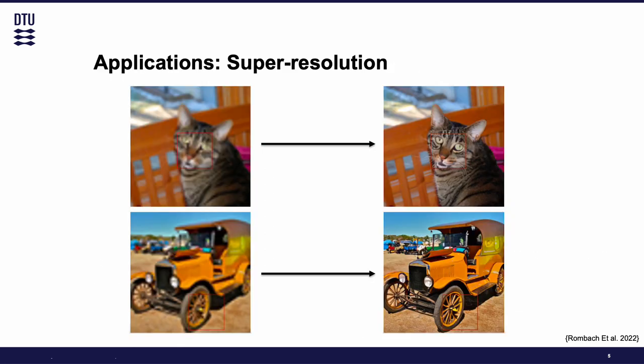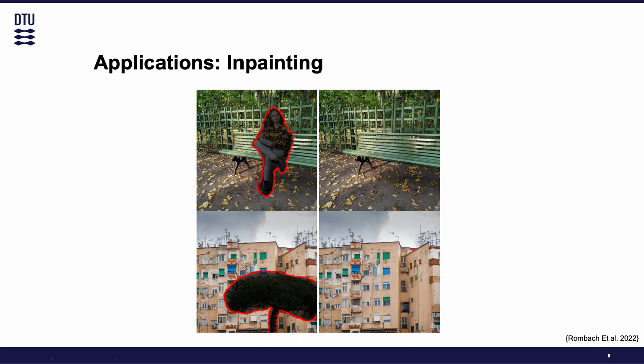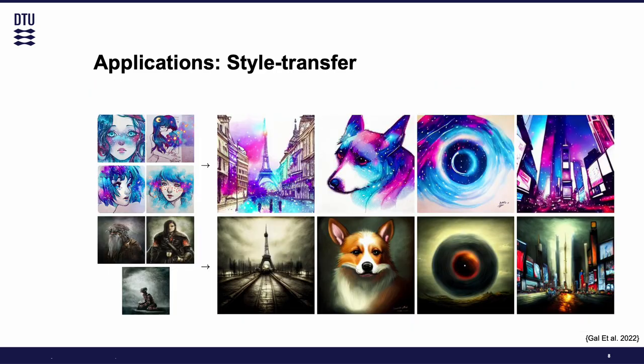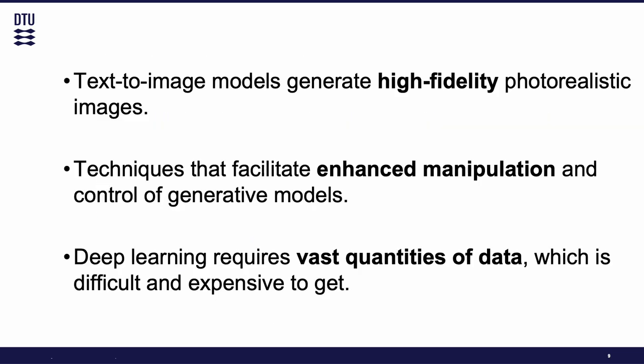Moreover, text-to-image models have tons of applications. For example, super-resolution, in which we increase the resolution of a given image; inpainting, where we fill in parts of an image with plausible content; outpainting, where we generate content beyond the boundaries of a given image; and finally style transfer, where we apply the artistic style of one image to another. Summarizing, text-to-image models generate high fidelity photorealistic images and give us access to techniques that facilitate enhanced manipulation and control of these generative models.